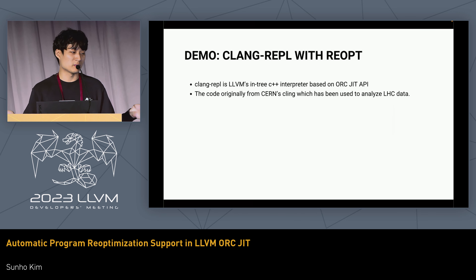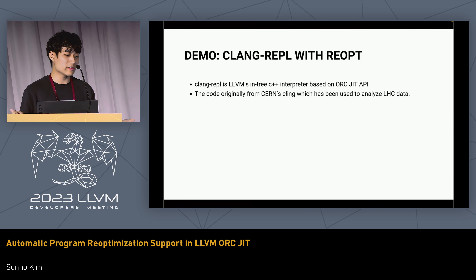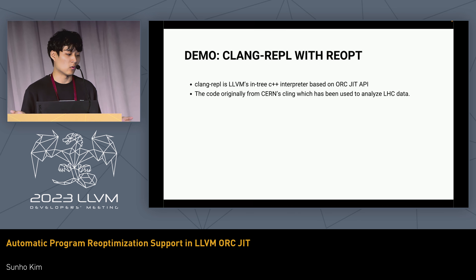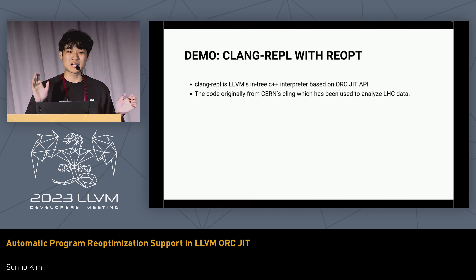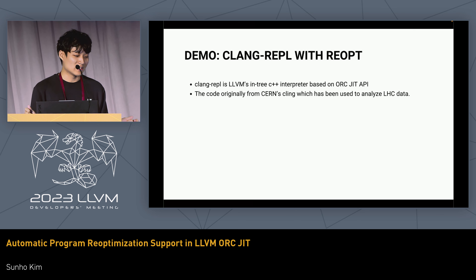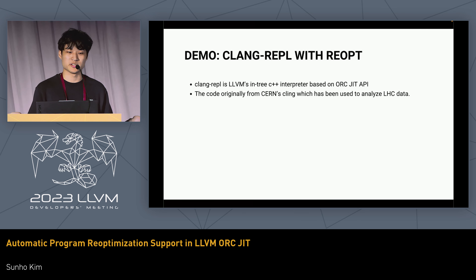I'm going to show you a brief demo of how things work together. I have enabled the re-optimization support at the Clang REPL level. Clang REPL is an incremental C++ interpreter — more like a JIT compiler since you can't interpret everything — but it runs C++ code incrementally. The code originally comes from CERN's Cling, which has been used to analyze LHC data, so there has been a real use case for this.